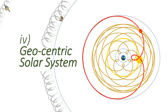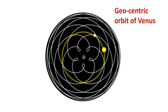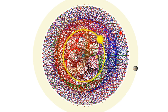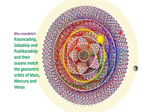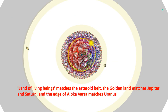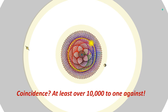Final model: the geocentric solar system as part of Bhumandala. Here is a geocentrically earth-centred orbit of Venus — that's Venus from the earth's point of view, as if the earth were stationary. Bhumandala's Jambudvipa, Salmali-dvipa, and Pushkara-dvipa and their oceans match the geocentric orbits of Mars, Mercury, and Venus. Taking that out to further regions of Bhumandala: the land of living beings matches the asteroid belt, the golden land matches Jupiter and Saturn, and the edge of Loka-Loka matches Uranus. Coincidence? That's at least over 10,000 to 1 against.